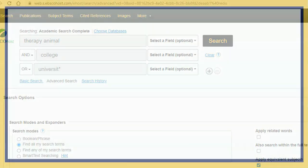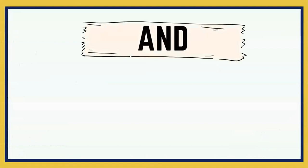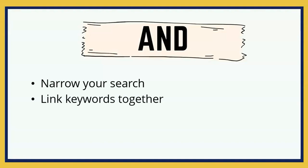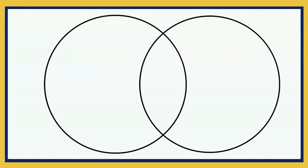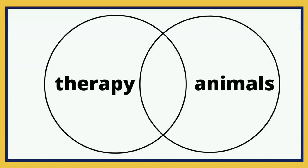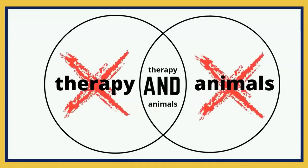Let's start with the AND operator. The AND operator is used to narrow your search and to link different keywords together. If you search for therapy animals, the database will be searching for each of these words separately, so you may be finding irrelevant results about various therapy methods or animals around the world. By adding AND between your two keywords, you are able to narrow your search to documents that contain both the words therapy AND animals.